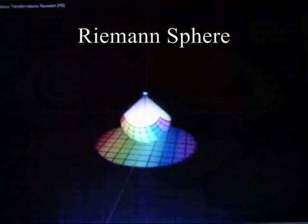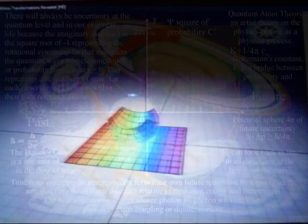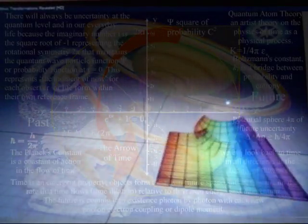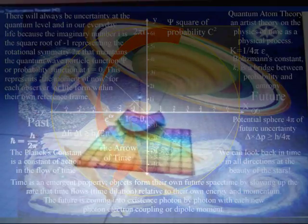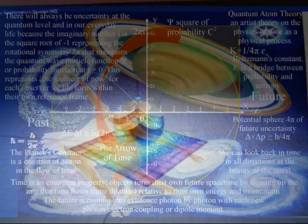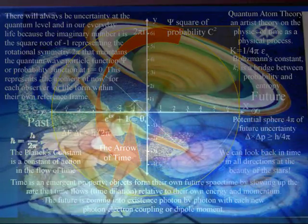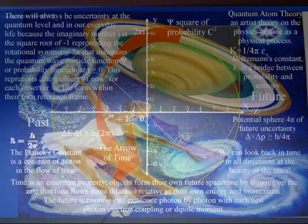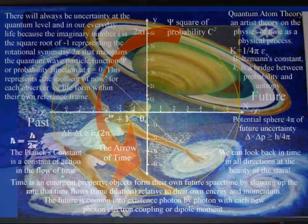The three dimensions of our everyday life are represented mathematically by placing the Riemann sphere above the complex plane. A light at the top shines through the spherical surface, illuminating the plane — as the sphere moves, the points on the plane follow. An observer who accelerates will see the patterns of constellations as seen in the night sky near Earth continuously transform, relative to his acceleration, according to transformations upon the complex plane. This is because each object or observer is forming their own future relative to their own energy and momentum. Therefore, each individual observer can look back in time in all directions from the centre of their own reference frame at the beauty of the stars.